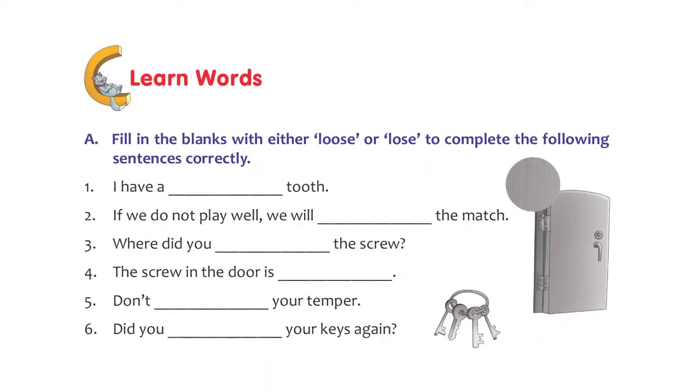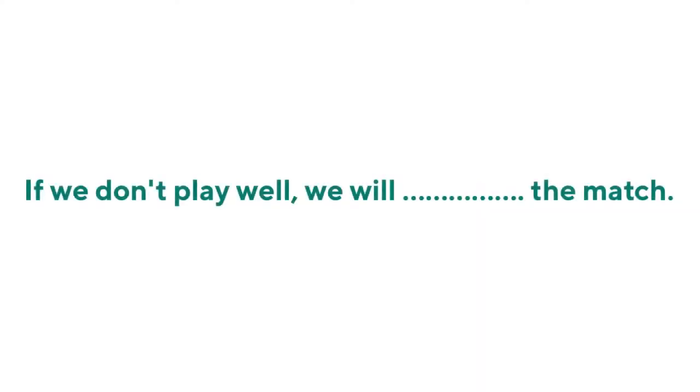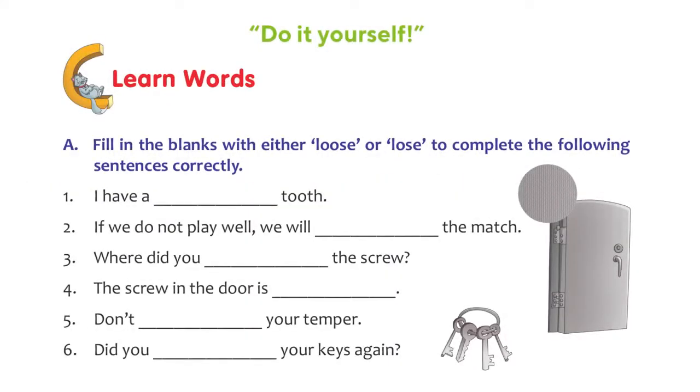Let's look at the exercise. All you have to do is to remember the meanings and see which word fits right. The first one is, I have a blank tooth. I have a wobbly tooth, not tight. So what is the word there? Loose, L-O-O-S-E. The next one is, if we don't play well, we will blank the match. We will lose the match, L-O-S-E. Now look at the rest of them and it's easy for you to solve.